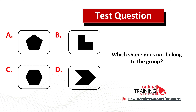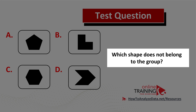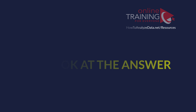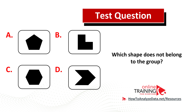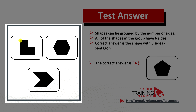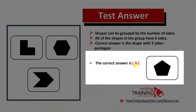This question is quite tricky — which shape does not belong to the group? You have four choices of shapes. Shapes can be grouped by number of sides. All shapes on the left have six sides — for example, counting the sides of each shape gives six, same with the hexagon, and same with the arrow shape. The correct answer is choice A, the pentagon, which only has five sides.